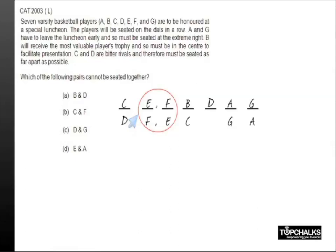Now the question is, which of the following pairs cannot be seated together? B and D obviously can come together if B sits here in this position - B and D are together. C and F can obviously be together in the case where you have C, F, B, D, A, G, or G, A, so this is also possible.